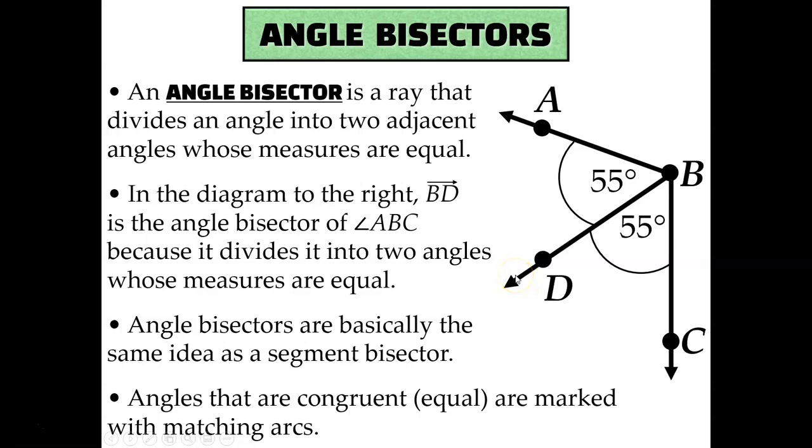Angle bisectors are basically the same idea as a segment bisector or a midpoint, except we're talking about angles instead of segments.